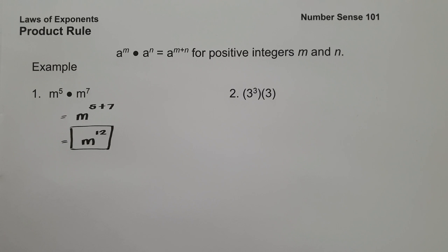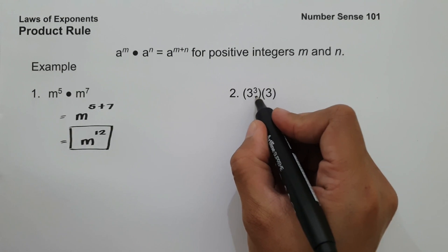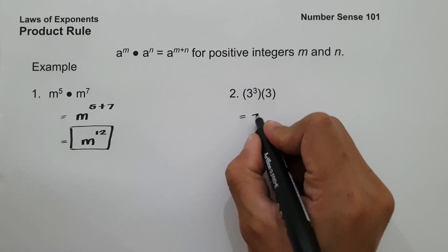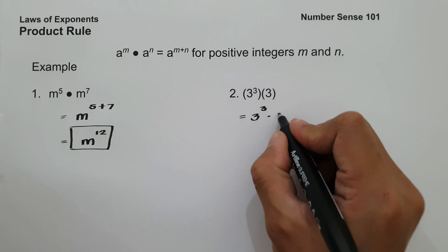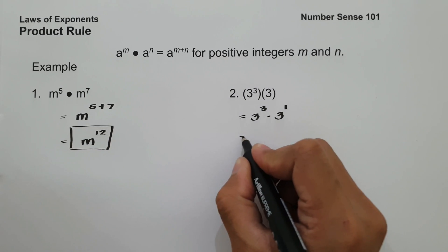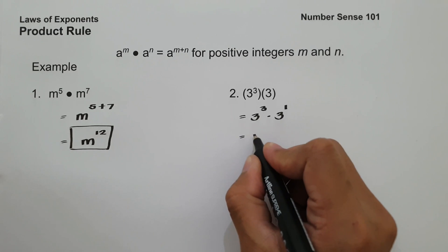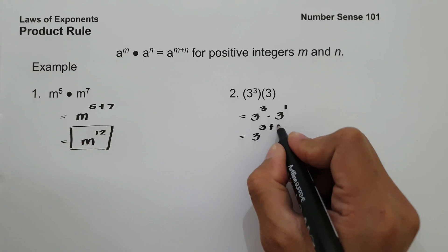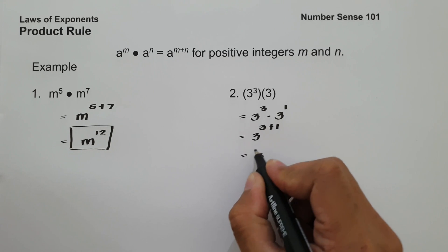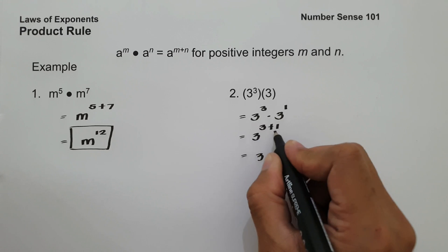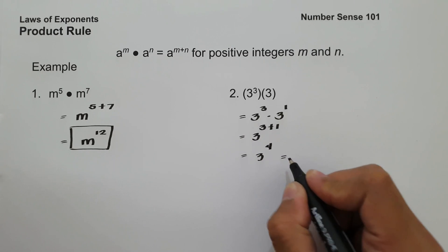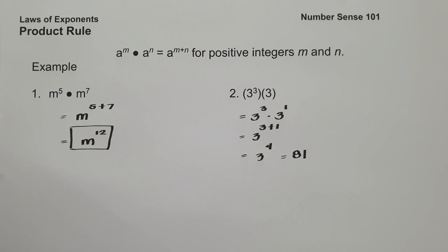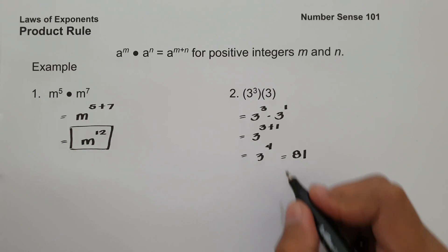On example number two, we have 3 raised to 3 multiplied by 3. Since the right-hand term's exponent is 1, this will be 3 raised to 3 multiplied by 3 raised to 1. Since we have the same base, all we have to do is copy the base and add the exponents, that is 3 plus 1. So this will be 3 raised to 4, that is 81, because you are going to multiply 3 four times to itself. And this will be our answer.